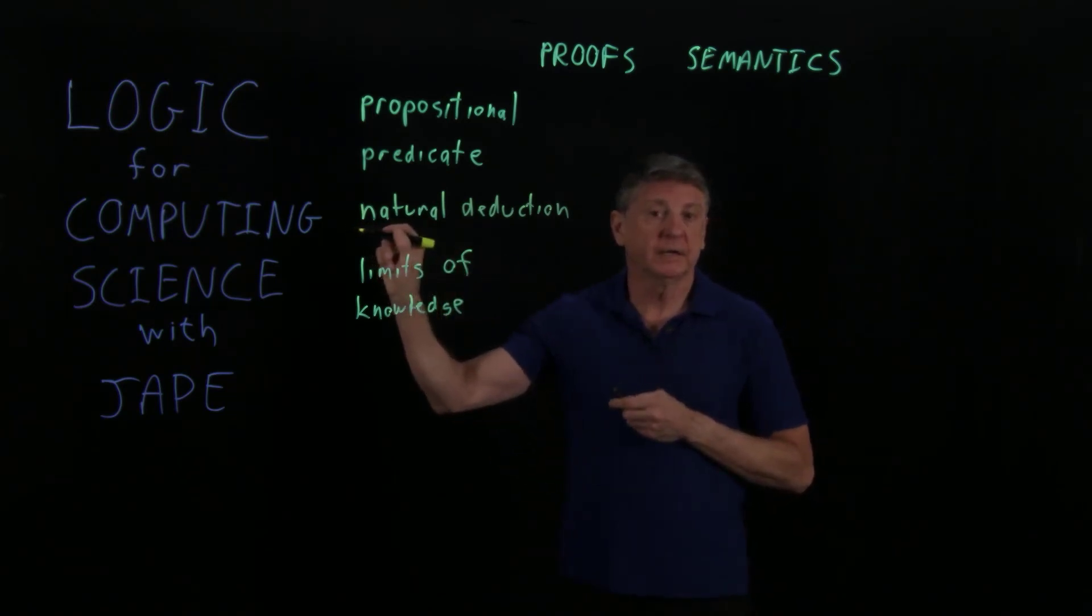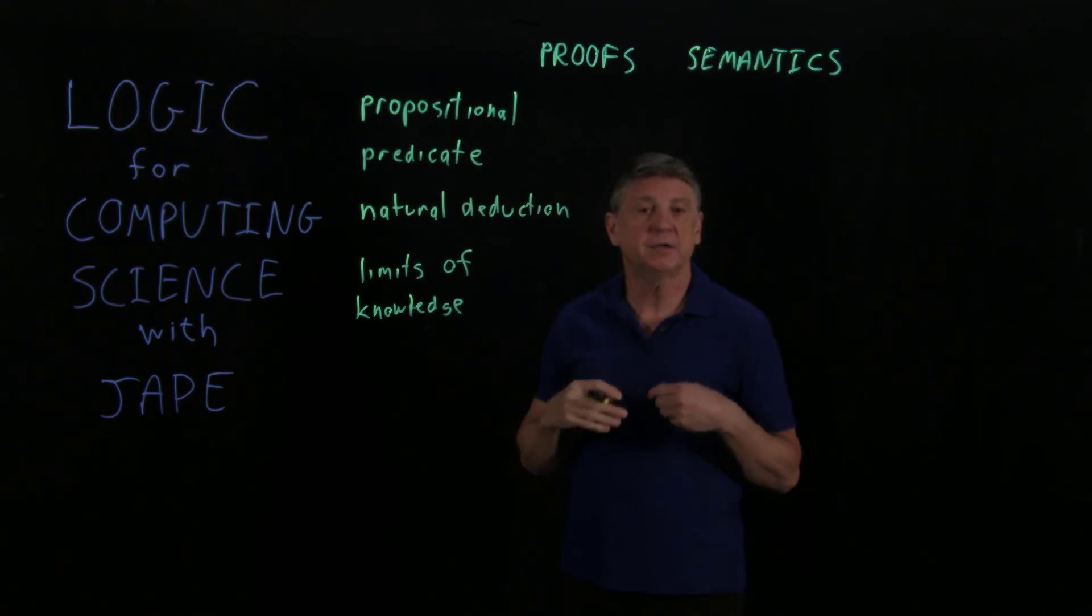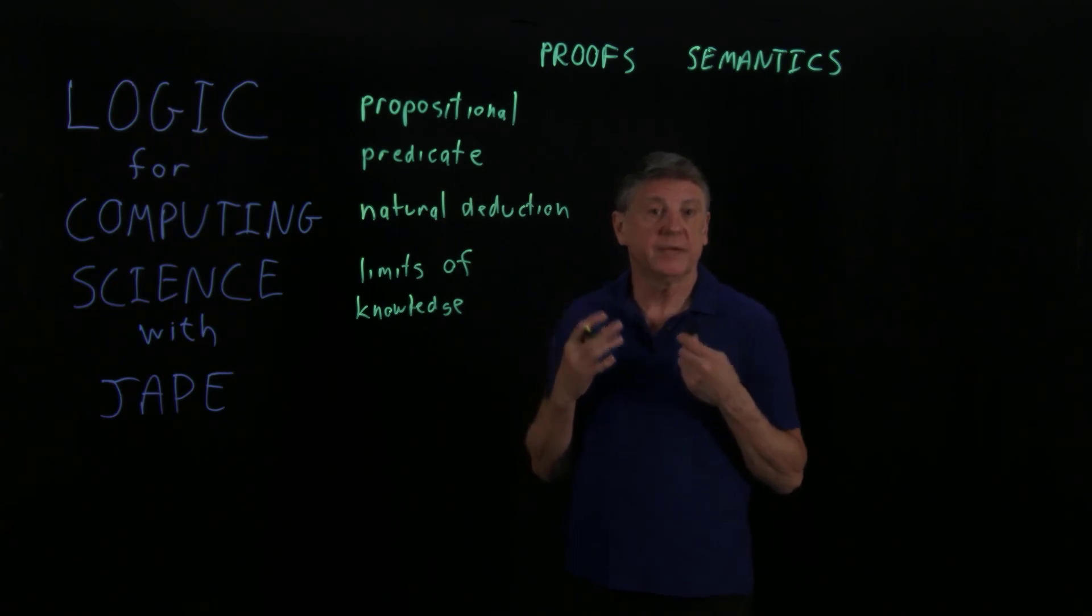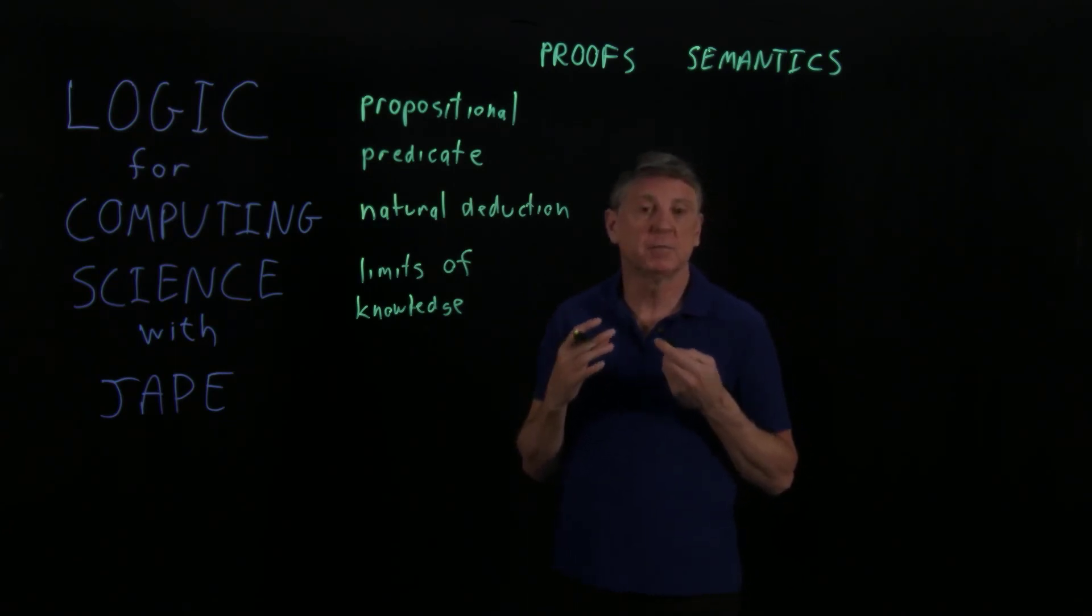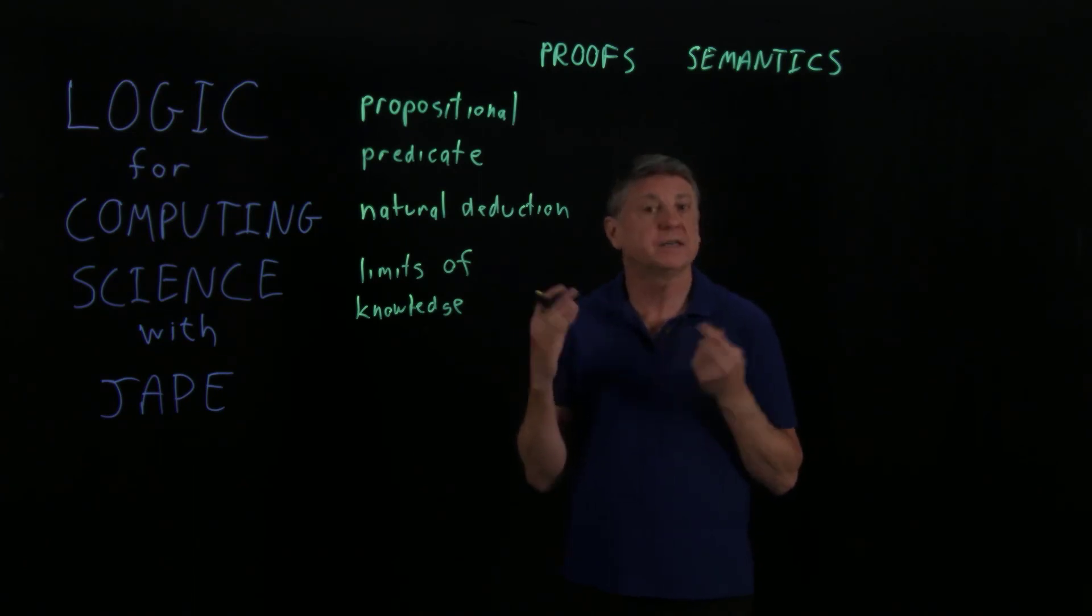And also, in later advanced courses in computing, it will turn out that natural deduction is a very easy way to represent the way that a computer program is written. And we'll be able in those future courses to prove certain theorems about programs. And so we'll be able to have a formal understanding of computers as languages that will arise from the learning that you can get in this course.